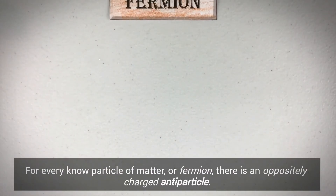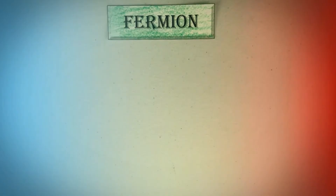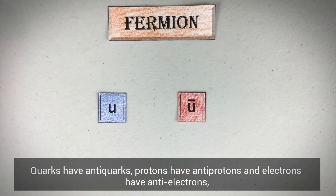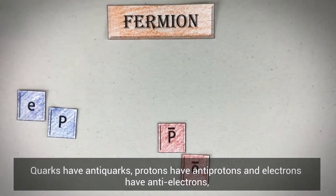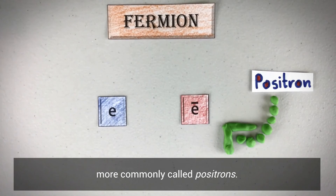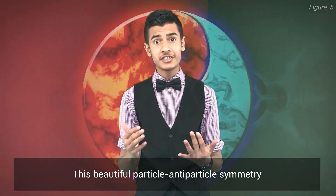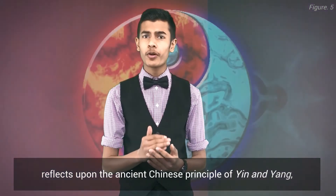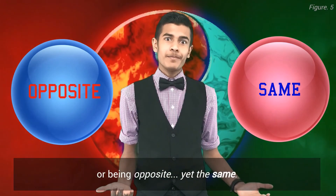For every known particle of matter, or fermion, there is an oppositely charged antiparticle. Quarks have anti-quarks, protons have anti-protons, and electrons have anti-electrons — or commonly called positrons. This beautiful particle-antiparticle symmetry reflects upon the ancient Chinese principle of yin and yang: being opposite, yet the same.